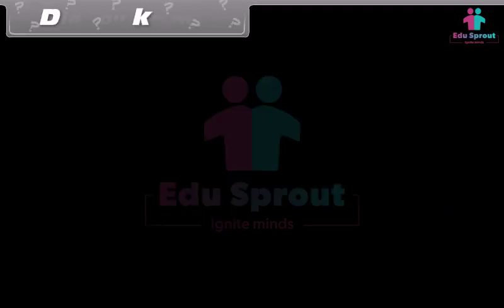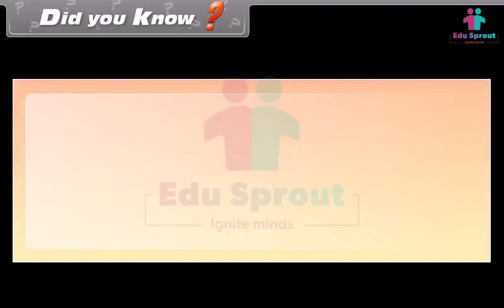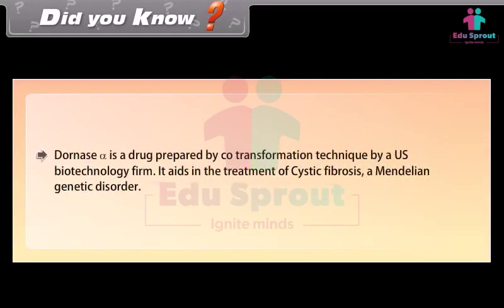Did you know? Dornase alfa is a drug prepared by co-transformation technique by a US biotechnology firm. It aids in the treatment of cystic fibrosis, a Mendelian genetic disorder.